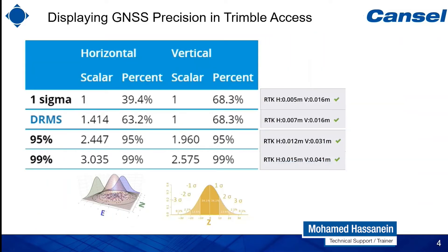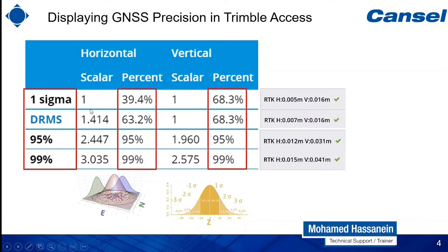Trimble Access offers the ability to compute the precision values with four different confidence levels. As you can see here, we have the one sigma, the distance root mean square, the 95%, and the 99%. Those four levels are different based on the percentage of the used measurements to compute the precision value.